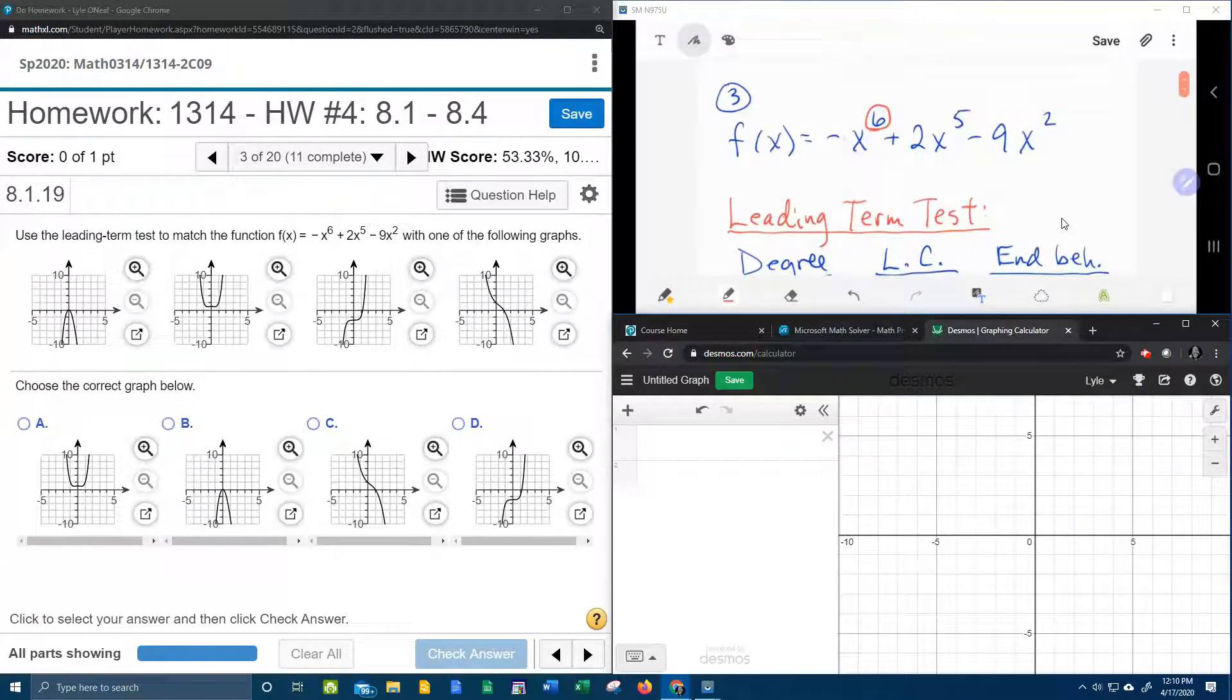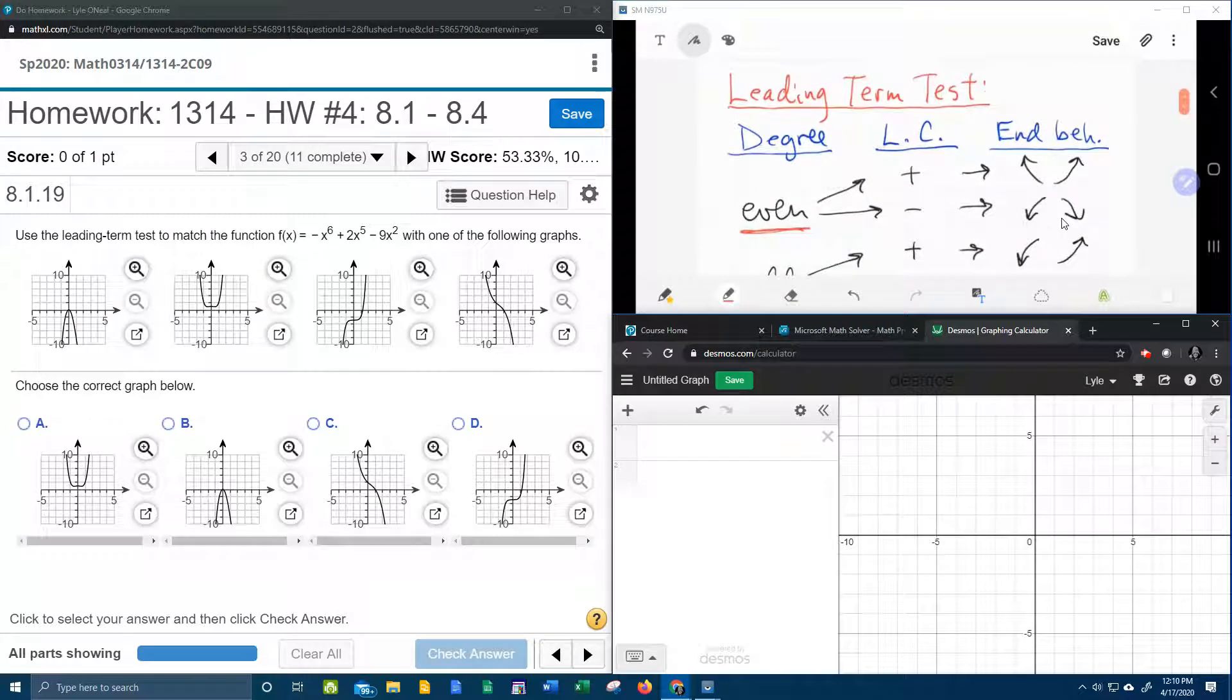The leading coefficient is the number in front of the variable with the biggest power. So our leading coefficient is negative one, which is negative.